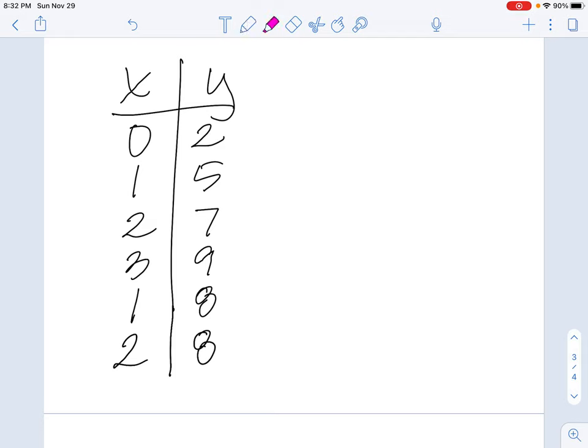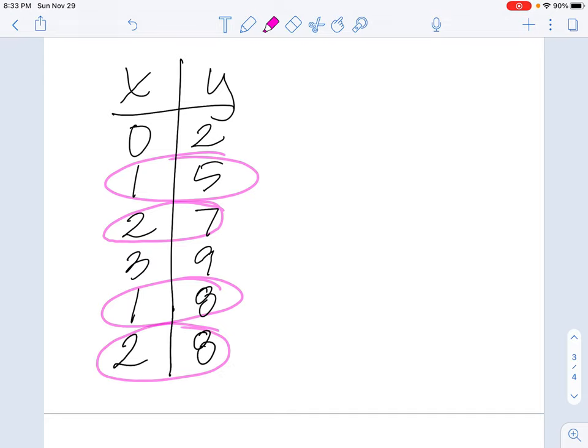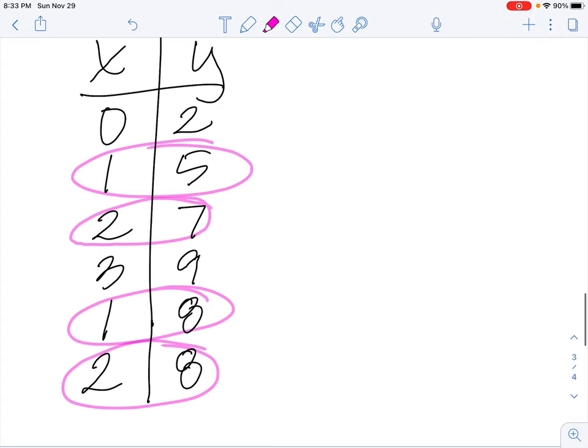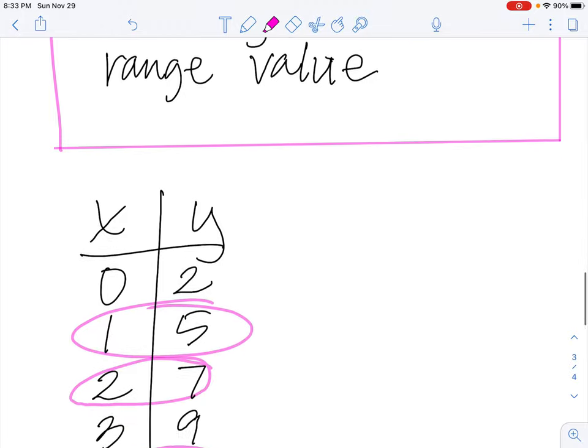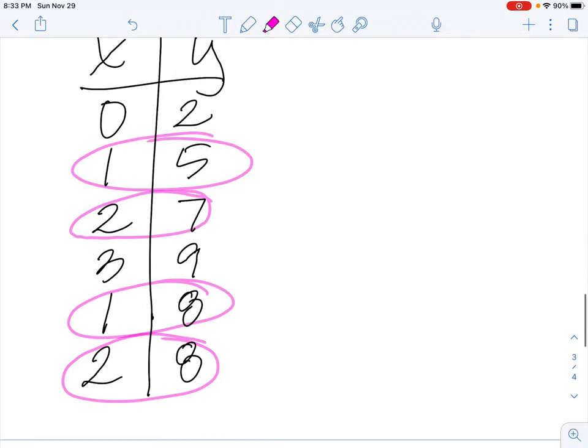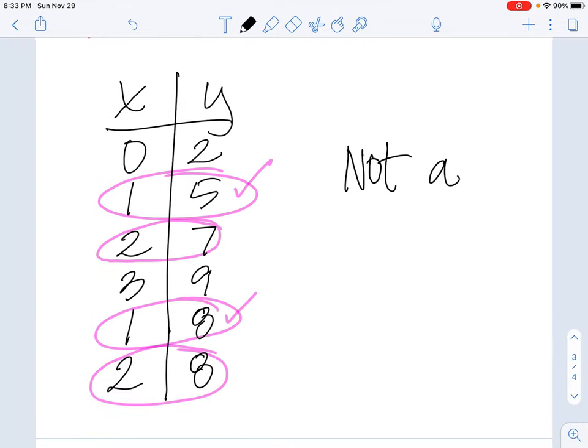So if you saw a t-chart that looked like this, you would know that this is not a function. One has a value of five, but one also has a value of eight. That's too many values for number one. Two has a value of seven, but two also has a value of eight. That's too many outputs for the value two. Remember, the rule was this: Each domain value can only have one range value. Look at that. Here's a range value for one and another one for one. And two has two different range values. So we would say this is not a function.